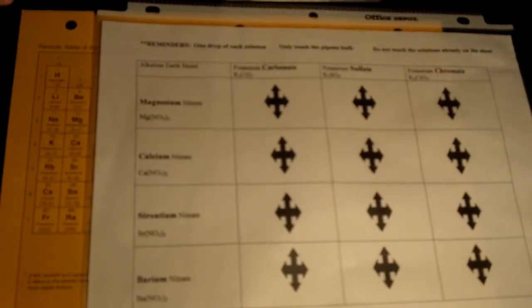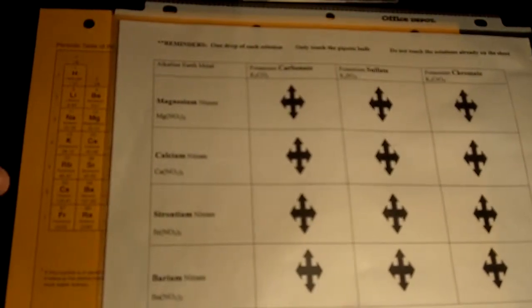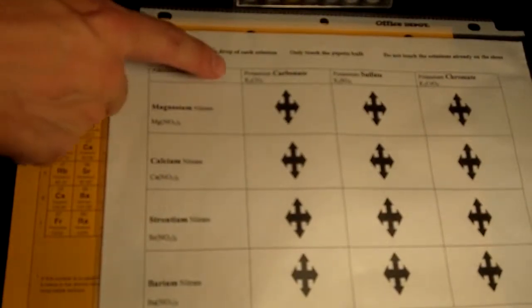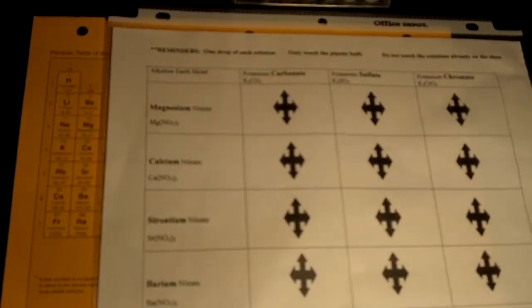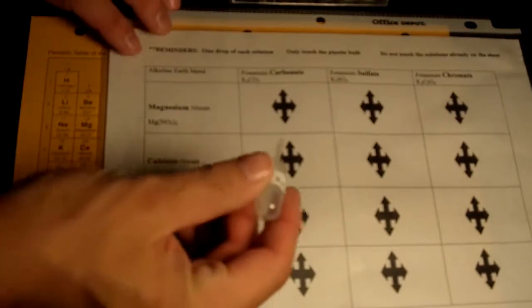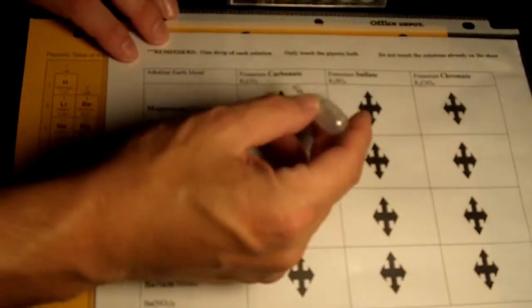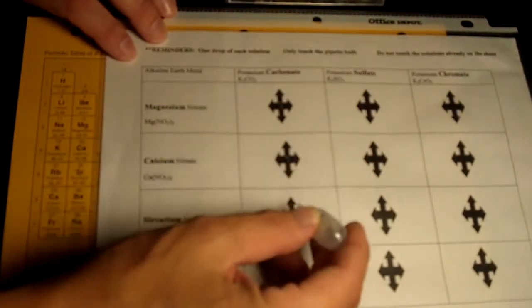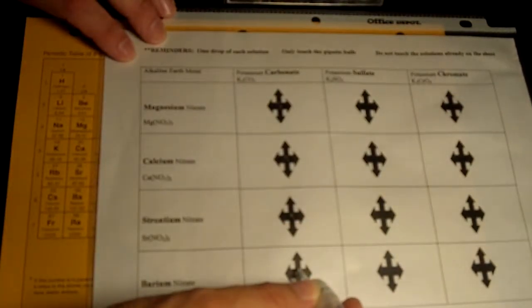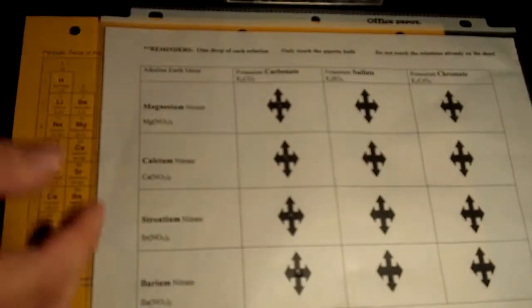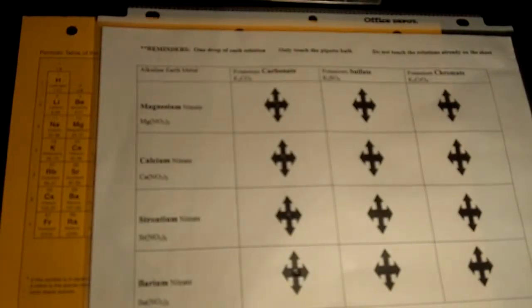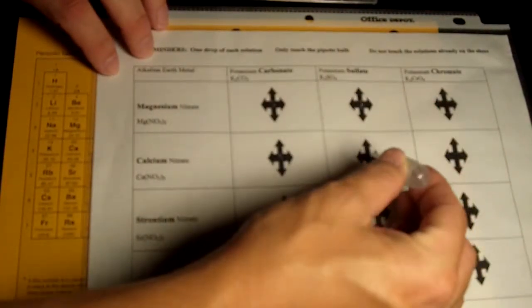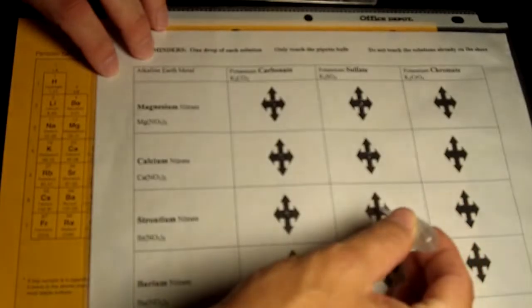So, once we do that, then we're going to cross-react it with the alkaline earth metals. Remember, these are all aqueous solutions. Aqueous means just that they've been dissolved in water. So, the first compound that we're going to use is the potassium carbonate. I'm going to get the potassium carbonate pipette, and then I'm going to hold the pipette right over the target, and I'm going to squeeze out just one drop. And then I'm going to move down the column and do the same to the remaining three targets. And then once that's done, then I'm done with potassium carbonate. Then I'm going to move on to the next one, which is the potassium sulfate, that's K2SO4, and I'm going to do the same thing. Again, just one drop on each one of these.